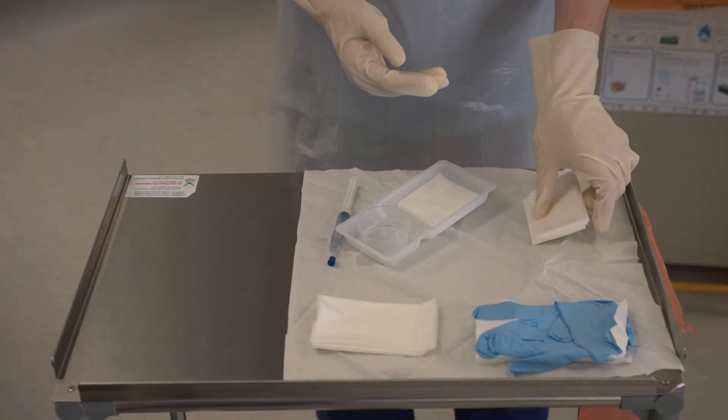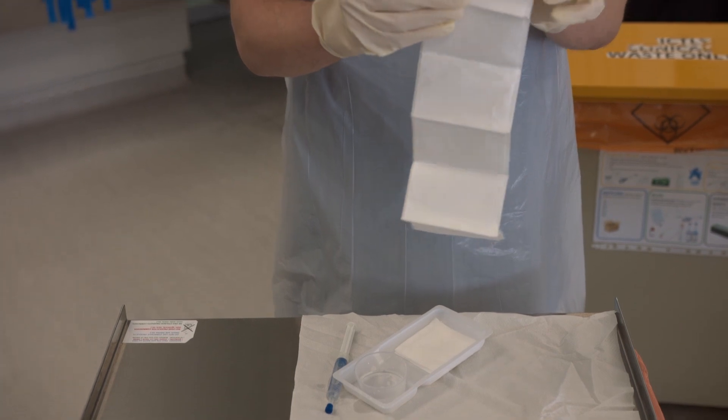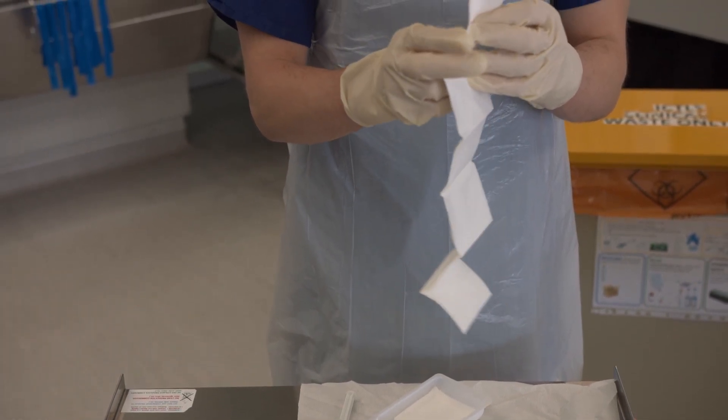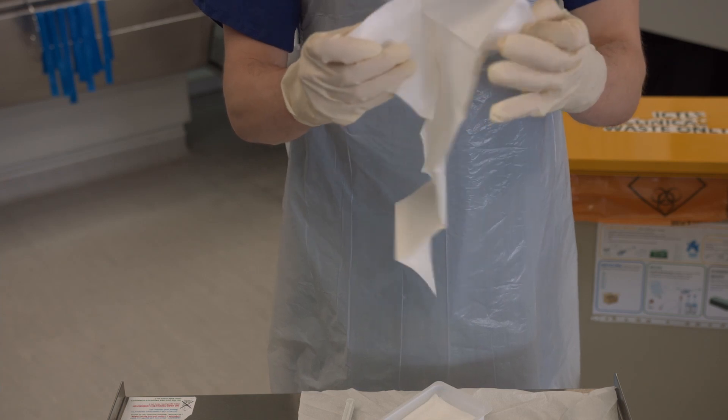Go over to your sterile field, pick up the non-textured sheet which you will use to extend the sterile field to the other side of the trolley, overlapping the sheets slightly.